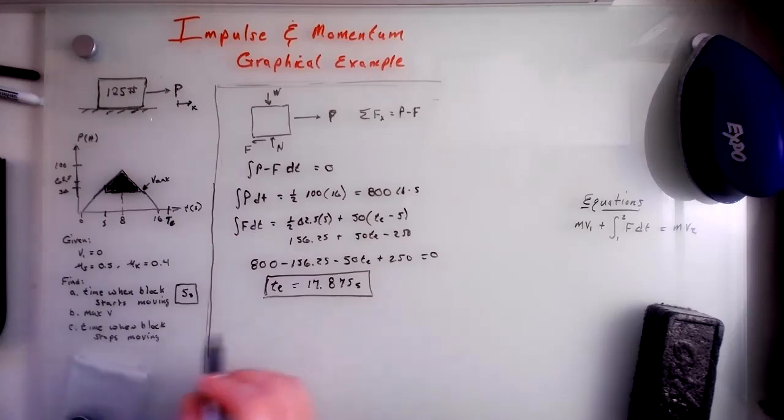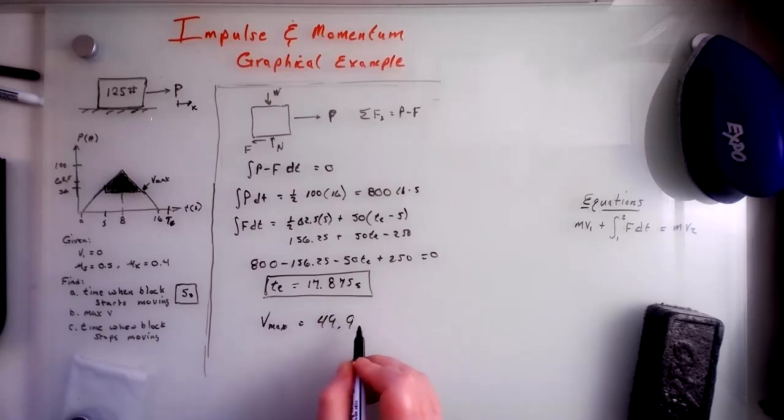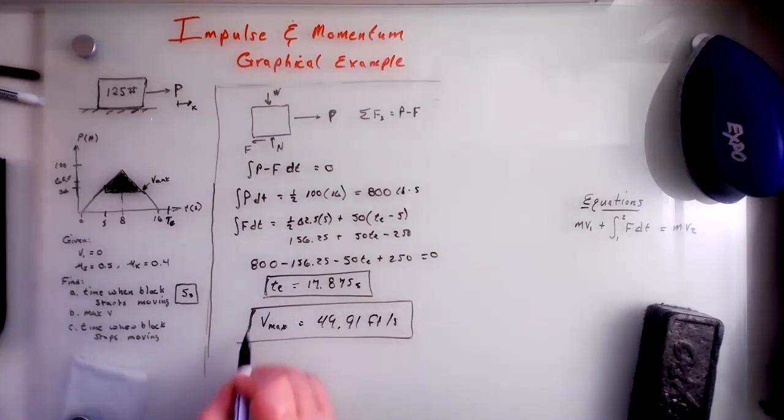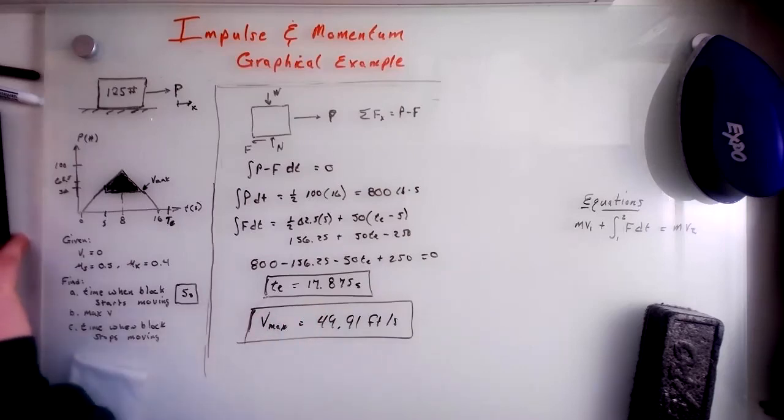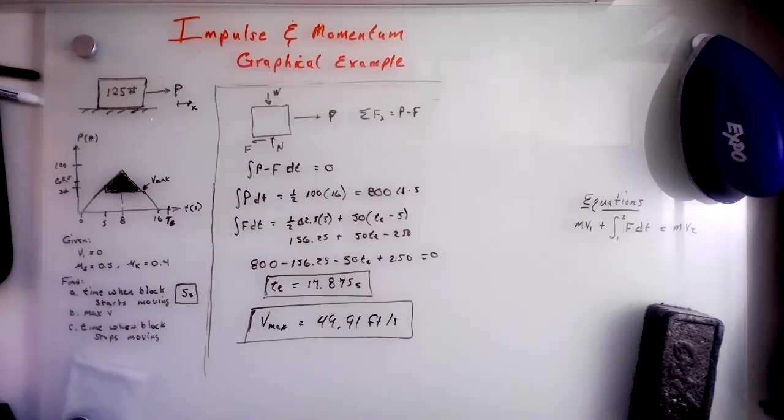So max V, we got that, that was 49.91. So V max, bringing that back, that was 49.91 feet per second. And things, it stops at 17.875 seconds. So that is how you do a graphical impulse problem. Thanks for watching. And I will see you in the next video. Bye-bye.